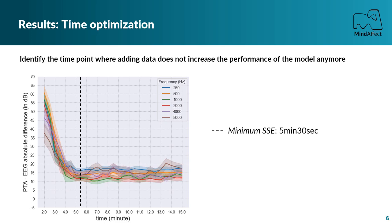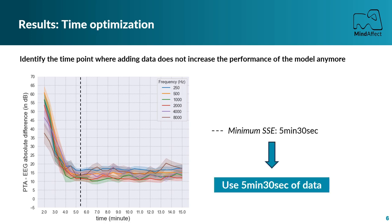By comparing the sum of squared errors between PTA thresholds and EEG thresholds, we identified this duration to be 5 minutes and 30 seconds of data. Therefore, in the next analysis, we use only the first 5 minutes and 30 seconds of recording to estimate thresholds and compare them with the behavioral methods.